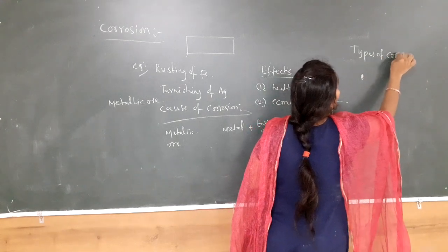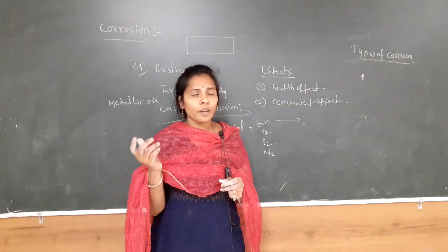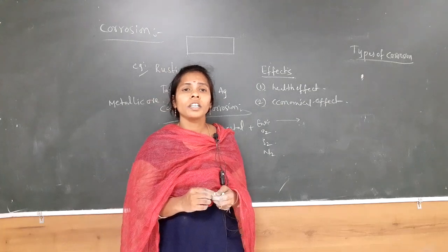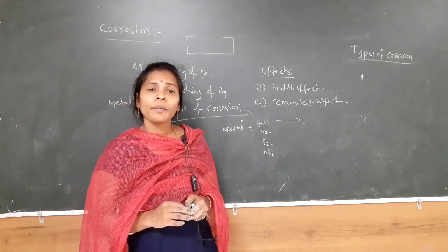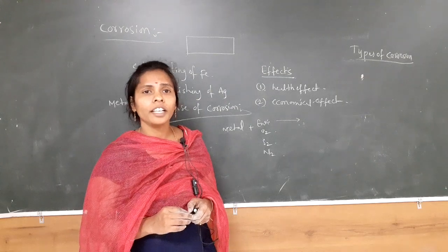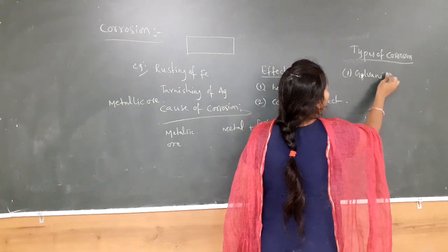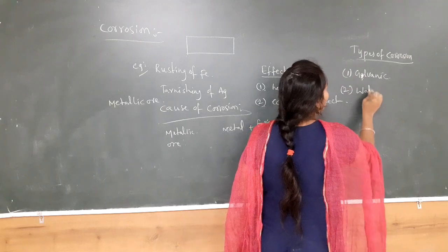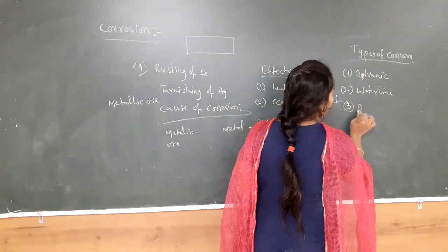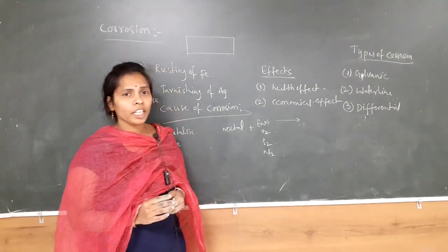There are various types of corrosion — galvanic corrosion, pitting corrosion, differential aeration, waterline corrosion, and many more. But in our syllabus we have only three types: galvanic corrosion, waterline corrosion, and differential aeration. Waterline corrosion is very important for the external examination. The second and third types are similar to each other.